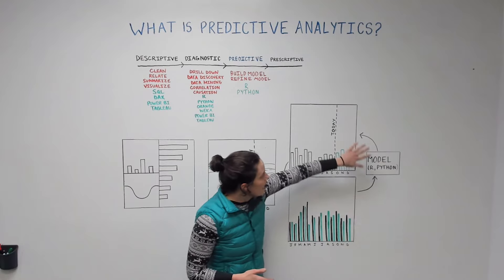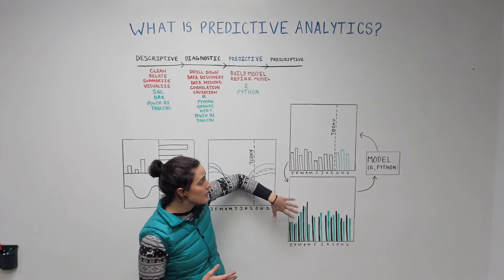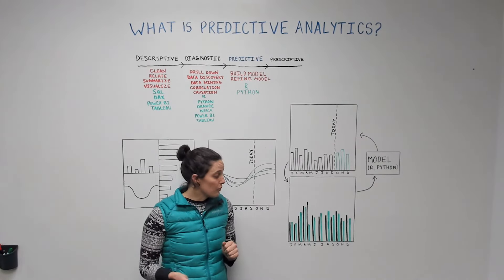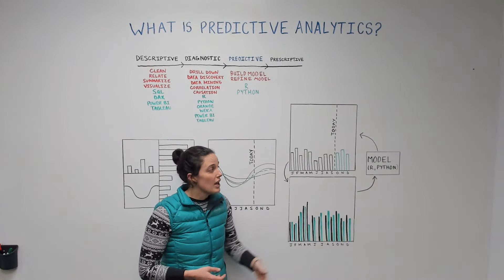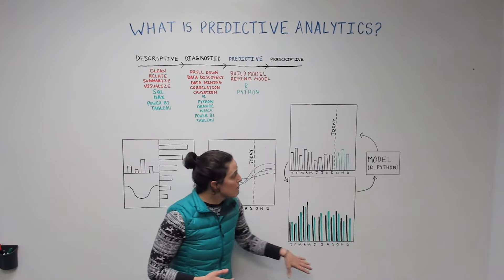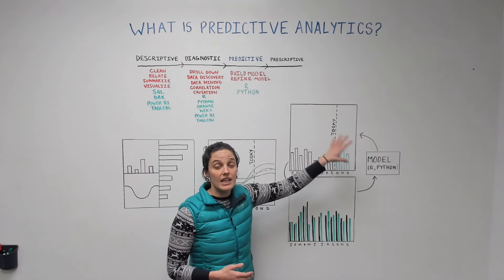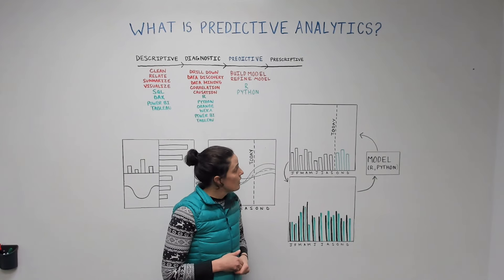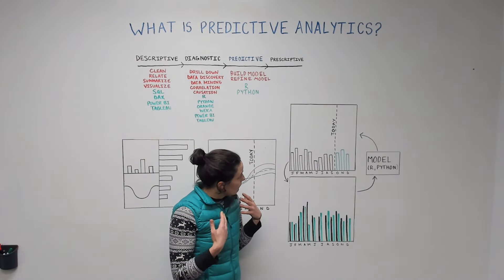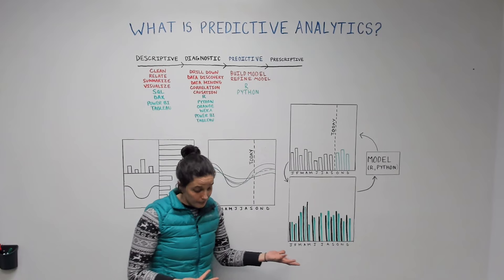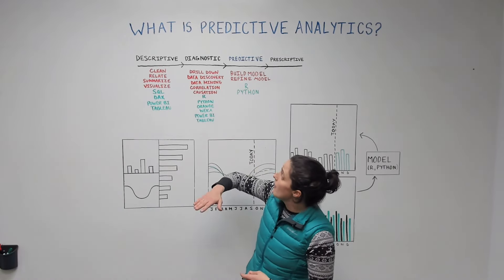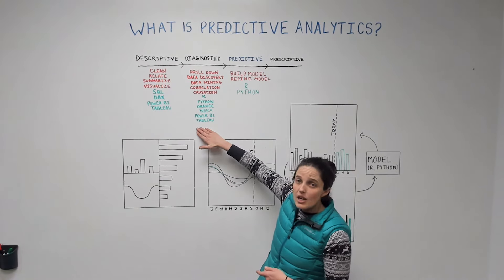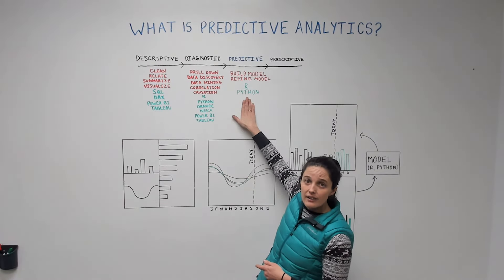This cycle can happen a couple of times or many times — it really depends on the data, the objective, and a lot of different factors. We do try to minimize the number of iterations before we have a really sound predictive model. So that's predictive analytics in a nutshell: once you have a solid foundation of descriptive and diagnostic analytics, we can really start pushing forward with predictive analytics.